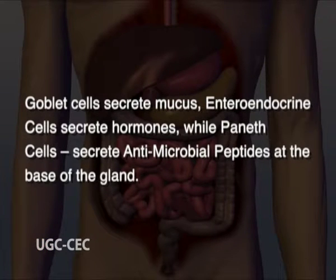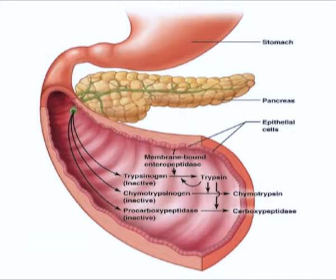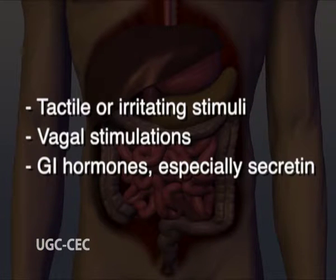During mitosis, one of the two daughter cells remains in the crypt as a stem cell while the other differentiates and migrates up the side of the crypt and eventually into the villus. Goblet cells secrete mucus, enteroendocrine cells secrete hormones, while Paneth cells secrete anti-microbial peptides at the base of the gland. The Brunner's gland is located in the wall of the proximal duodenum in the submucosa coat. It secretes large amounts of alkaline mucus which contains mucin and weak proteolytic enzymes. The various stimuli that help in stimulating the release of pancreatic secretions are tactile or irritating stimuli, vagal stimulation and GI hormones, especially secretin.